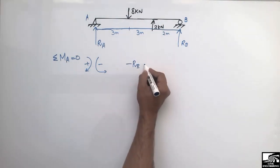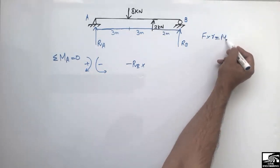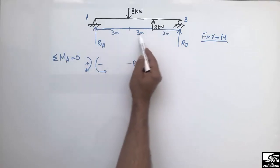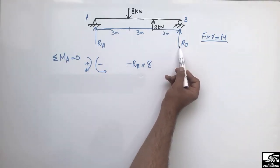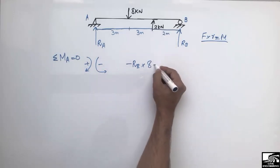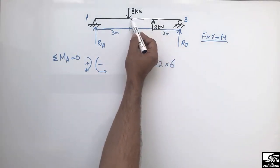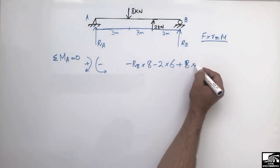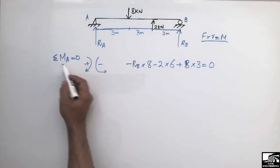Multiplying the force by the distance gives the moment. The moment arm from point B to point A is the whole distance: 3 plus 3 plus 2 equals 8 meters. So RB is multiplied by 8. The 2 kN load is also acting anti-clockwise, multiplied by its moment arm of 6 meters. The 8 kN load is acting clockwise around point A, so it is positive: plus 8 kN multiplied by its moment arm of 3 meters, all equal to zero.